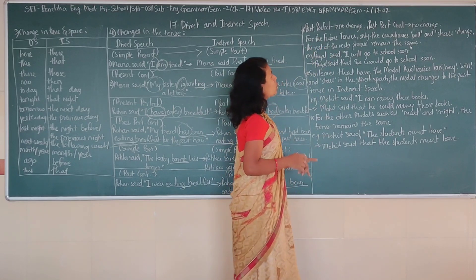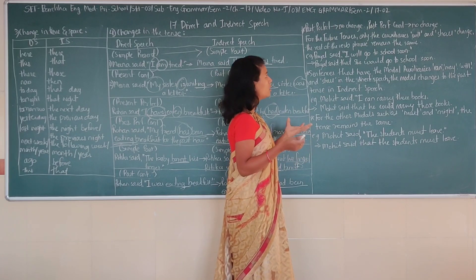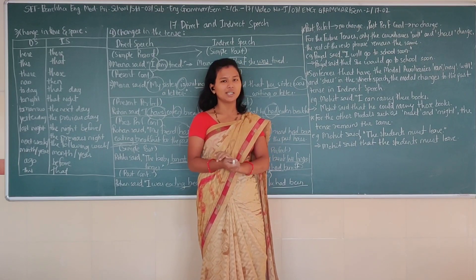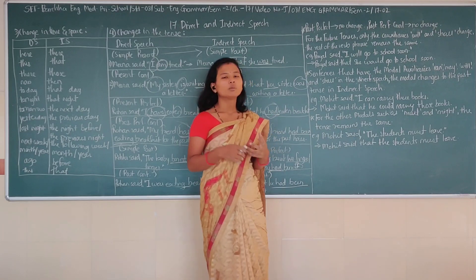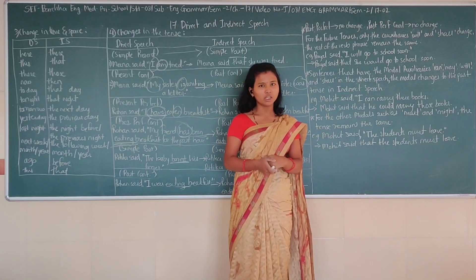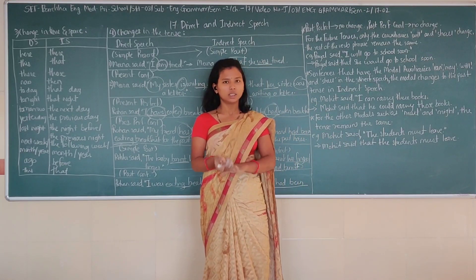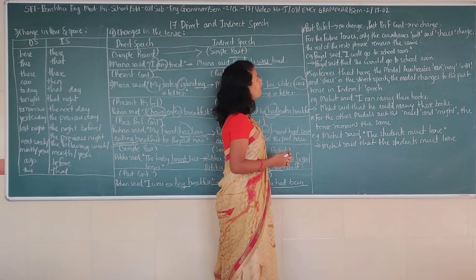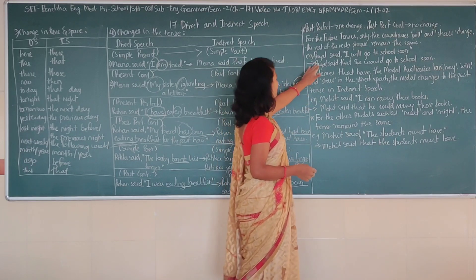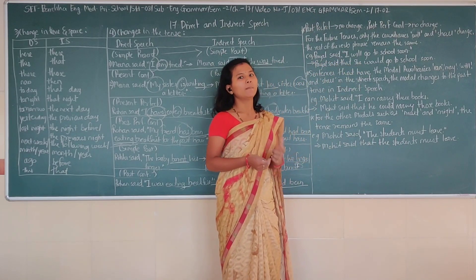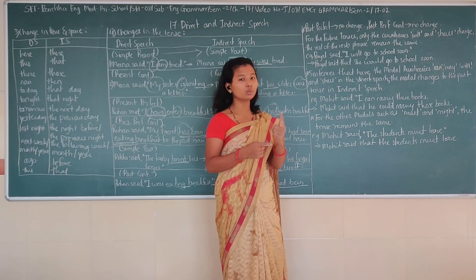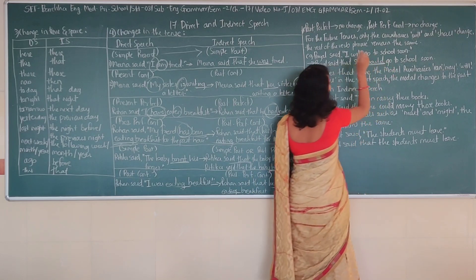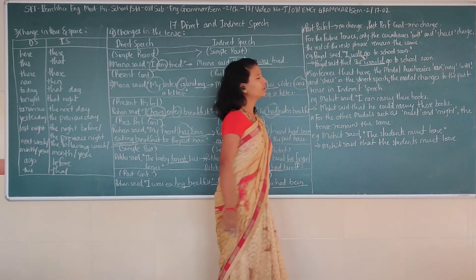For future tense, only the auxiliary verbs 'will' and 'shall' change; the rest of the verb phrase remains the same. For example: 'Payet said I will go to school soon.' In indirect speech: 'Payet said that she would go to school soon.' So 'will' becomes 'would' and 'shall' becomes 'should'.